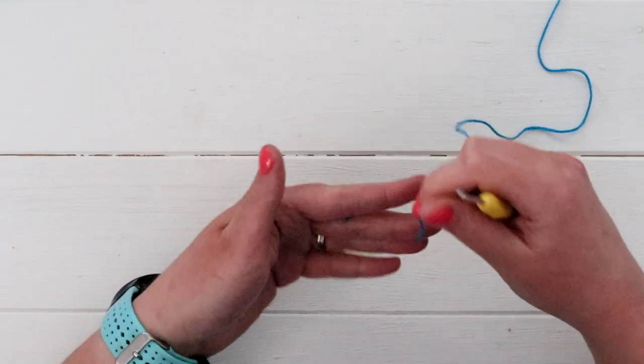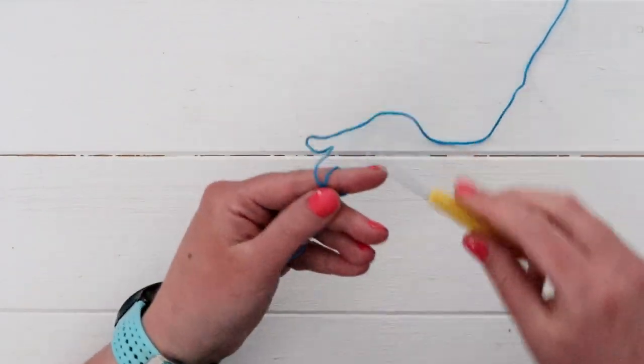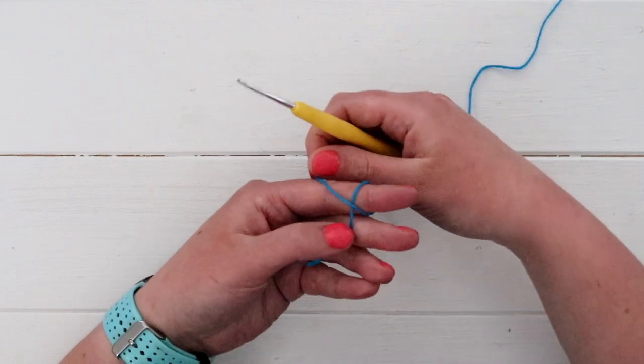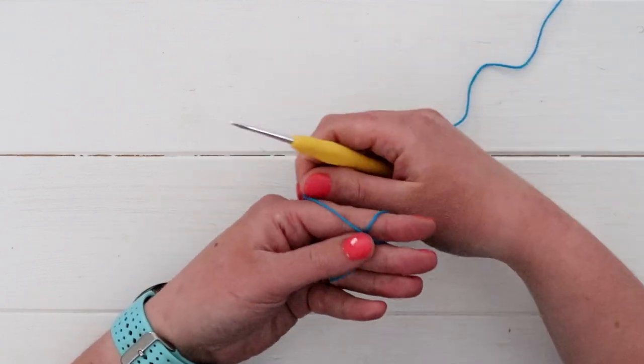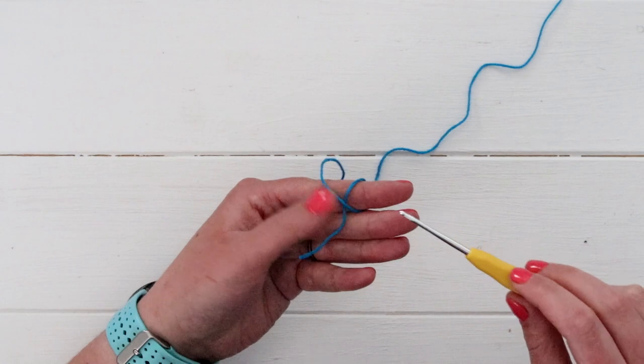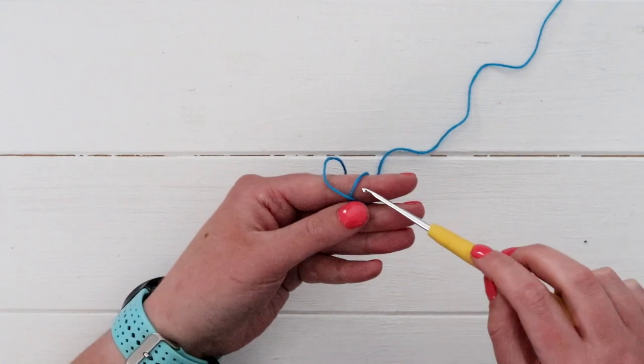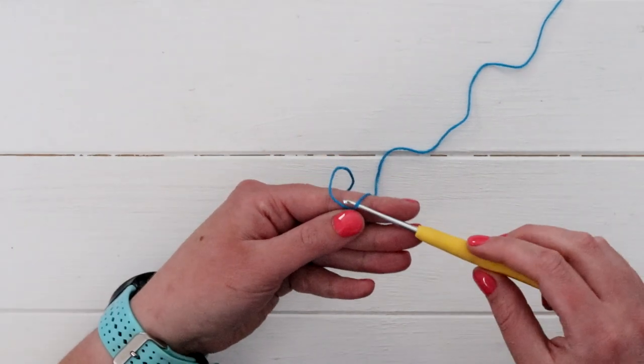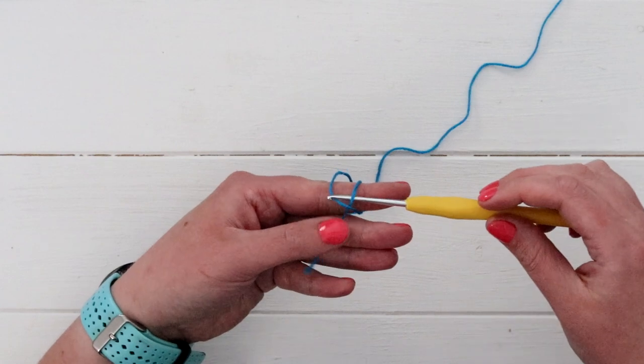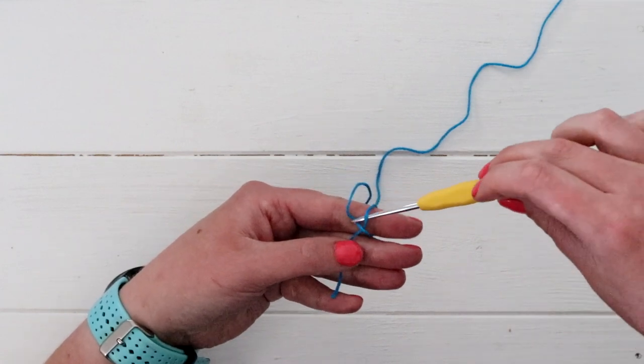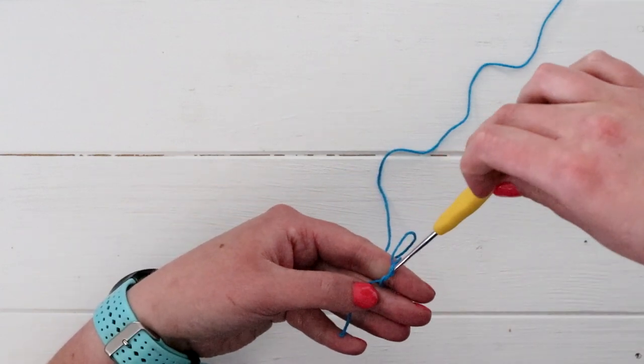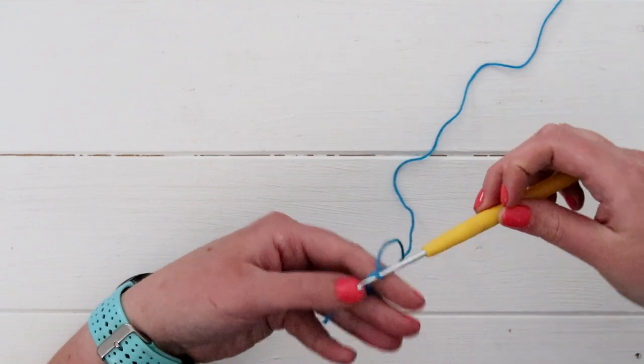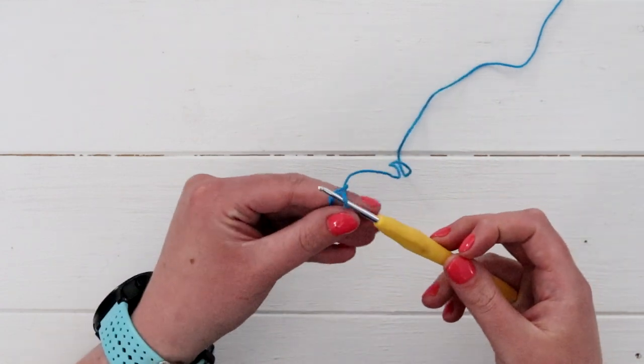So, to crochet these, we are going to start with a magic ring. So, you will make an X over your finger. You will put your crochet hook underneath the bottom strand, and then over the top of the top strand of thread or floss. And then you'll kind of pull it through. And this makes a loop.